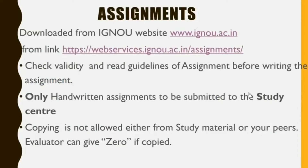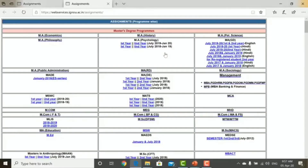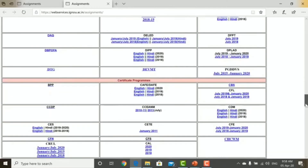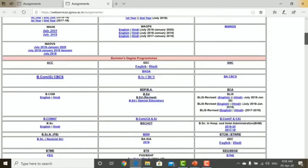We will now look at each component. First, assignments — where can you find them? Assignments are available on the IGNOU website. There is a student zone in the download section where you can go. You will find assignments there for different programs: master's degree programs, bachelor's degree programs, diploma, and certificate programs.